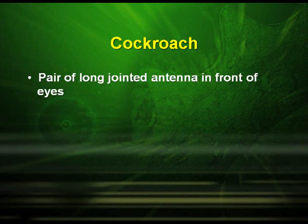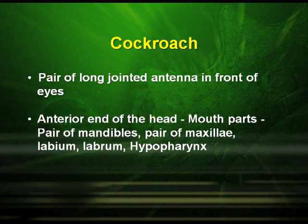A pair of jointed antennae is found in front of the eyes. The anterior end of the head has the mouth parts like a pair of mandibles, pair of maxilla, labium, labrum and hypopharynx.